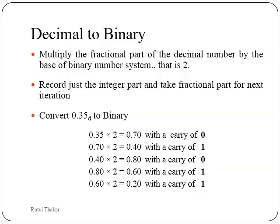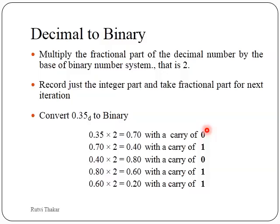Let us see the example: for 0.35 in decimal we have to convert it into equivalent binary. We can see that 0.35 multiplied by 2 gives 0.70. So 0.70 is taken for the next iteration and the integer part 0 is recorded as the first binary digit. 0.70 multiplied by 2 gives 1.40, written as 0.40 with carry of 1. 0.40 into 2 again gives 0.80 with carry 0. 0.80 into 2 gives carry of 1 with fractional part 0.6. This continues till we get 0 or till some specified decimal points, which can go to an infinite number.